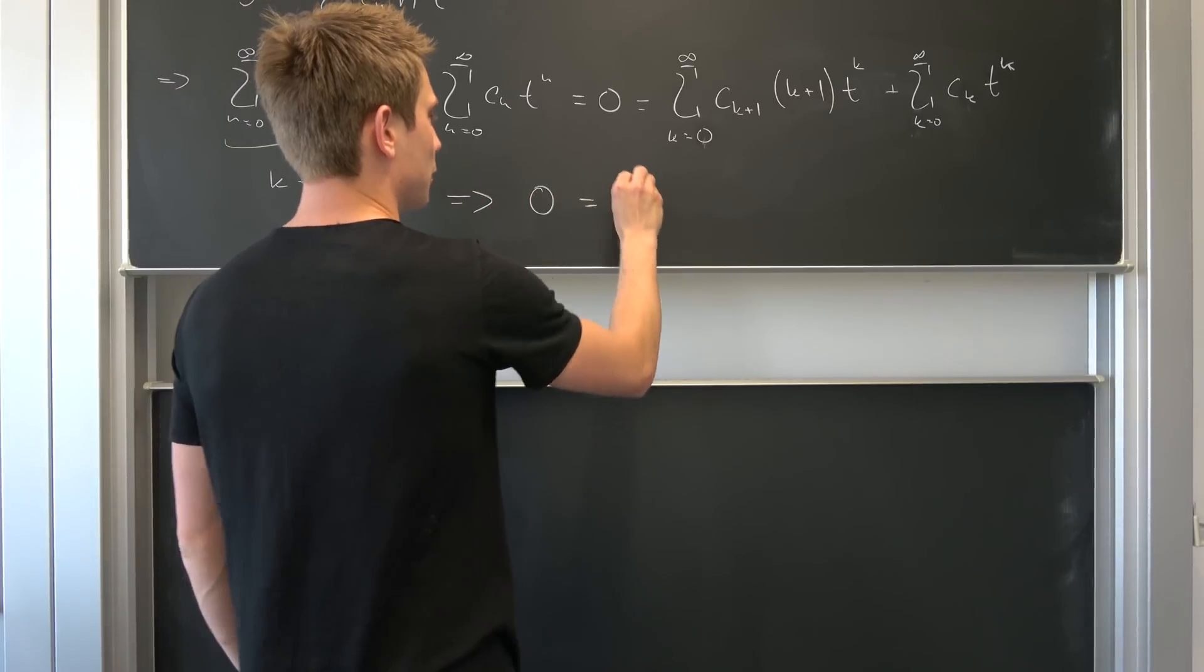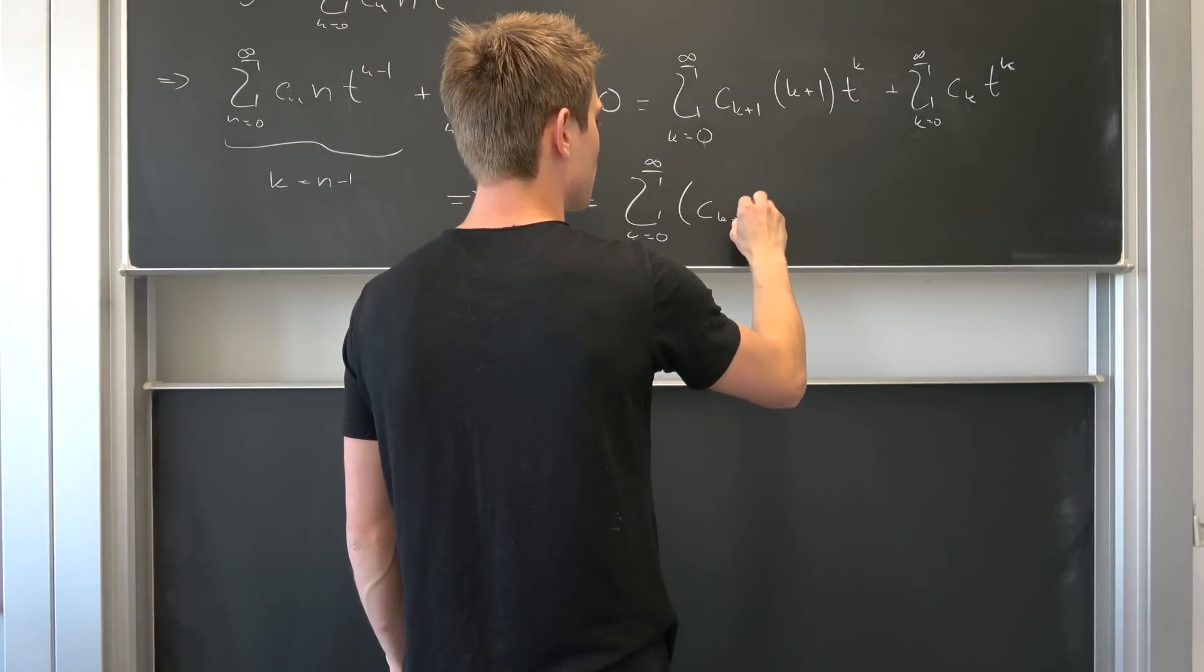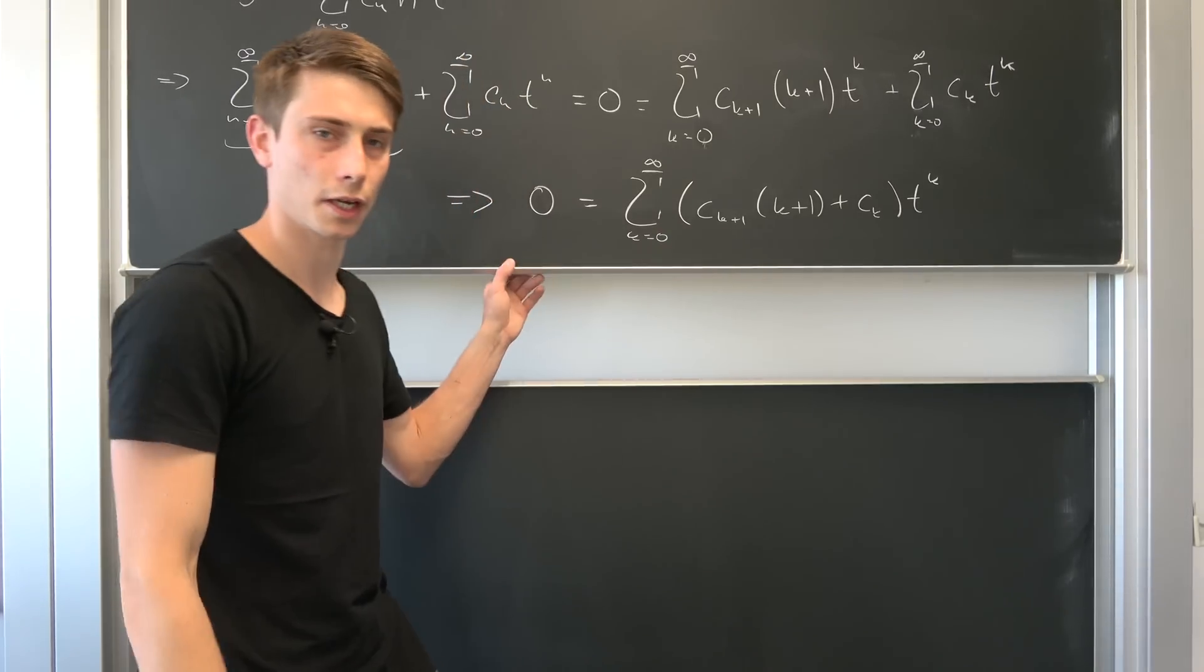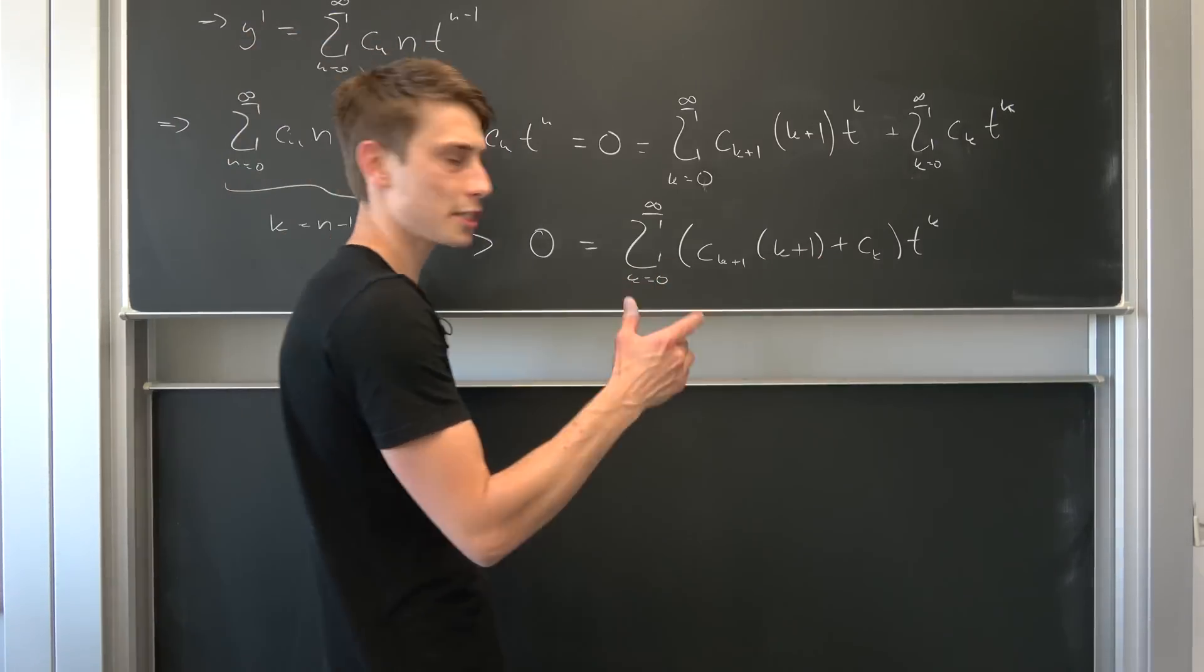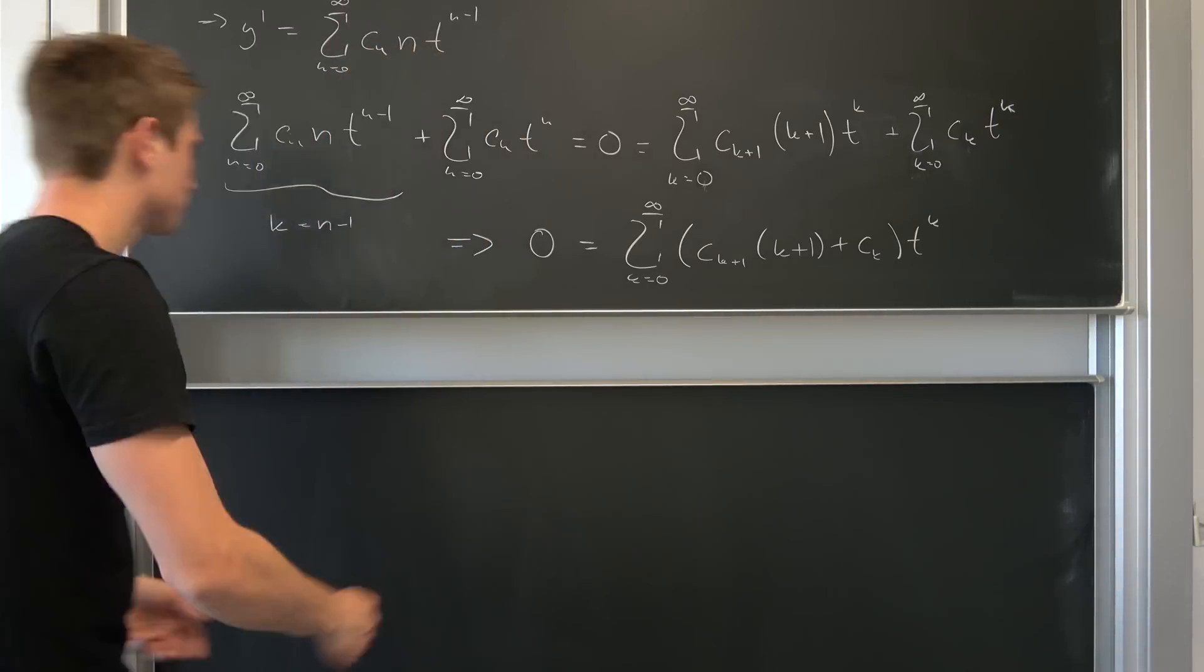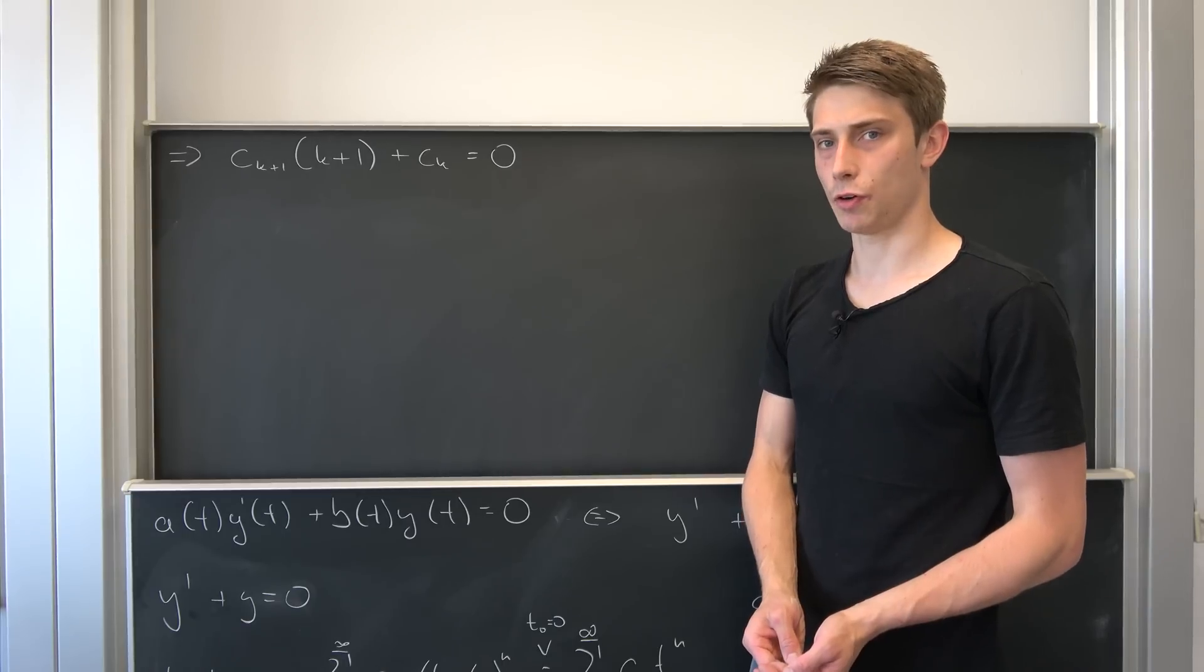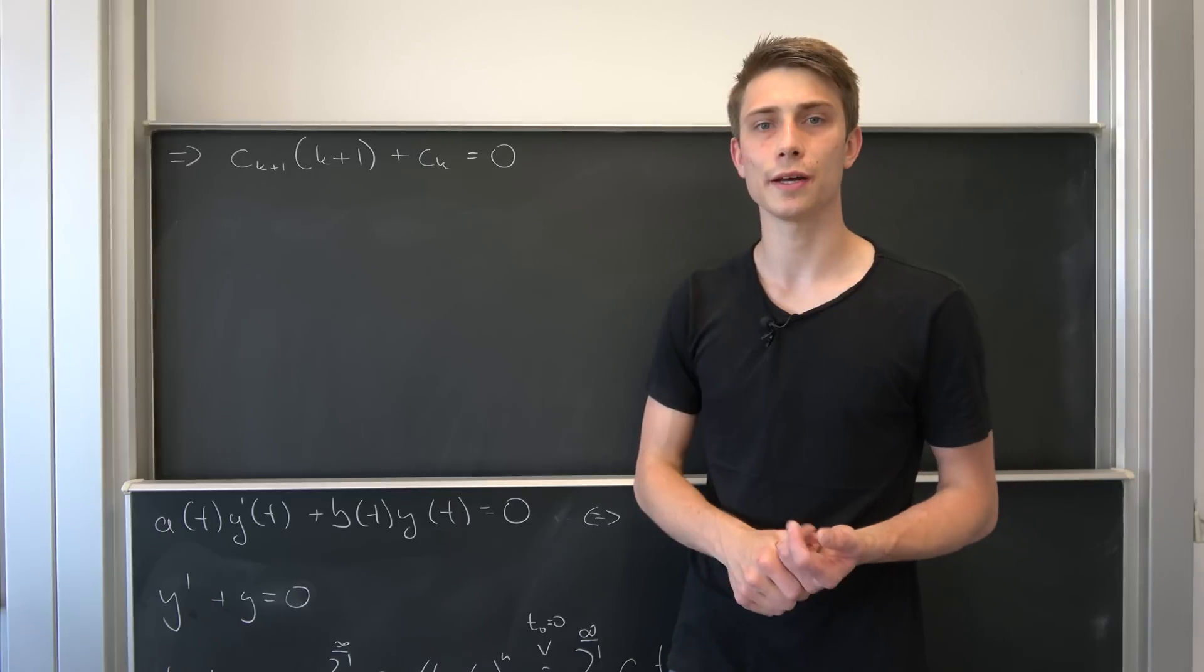That also means that 0 is nothing but a sum going from k equals 0 to infinity, and now we have c k+1 times k+1 plus ck times t to the k. And if you know something about sums, that's not equal to 0, that's just an operation. So that especially means this term right here needs to be 0, and we're going to work with this now. This right here is called a recurrence relation. We're dealing with some sequences. And what we want to find out are those ck's.